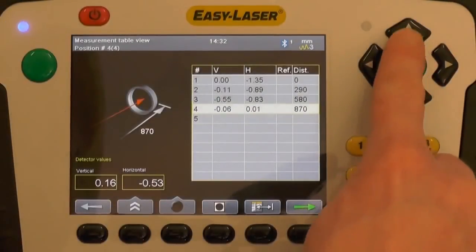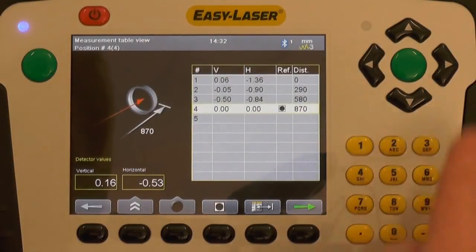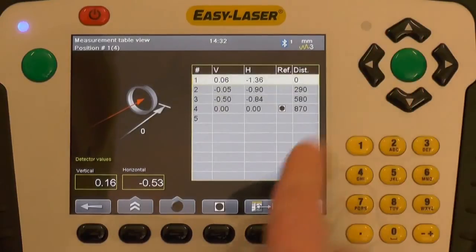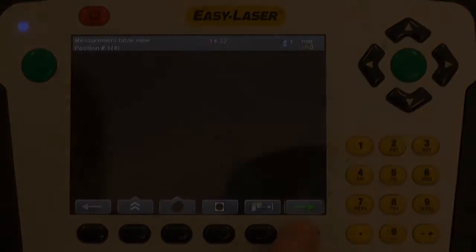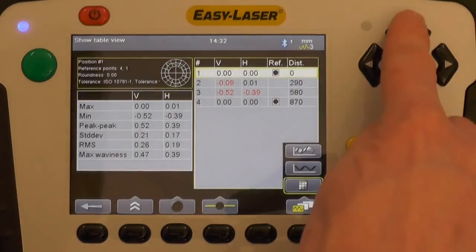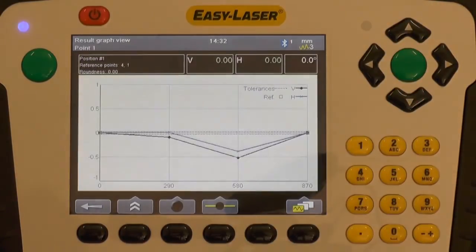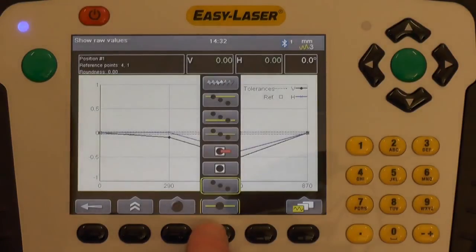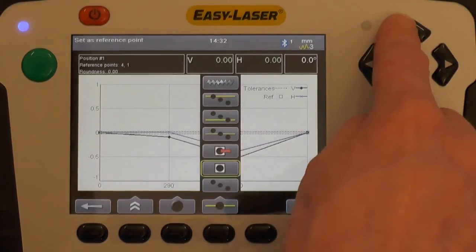Once all bearing journals have been measured we can go into the results screen. I will set the first and the last bearing journal as reference. The system also has tools to analyze the results such as tolerance settings, best fit, 3D graph, waviness etc.